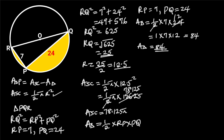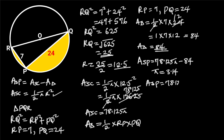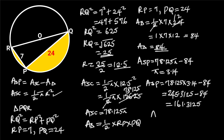Now we know the area of the semicircle and the area of triangle PQR. The area of the shaded portion is equal to 78.125π minus 84. Taking pi to be 3.14, the area of the shaded portion equals 78.125 times 3.14 minus 84. 78.125 times 3.14 is equal to 245.3125, and 245.3125 minus 84 is equal to 161.3125. Hence, the area of the shaded portion is approximately 161.31 square units to 2 decimal places.